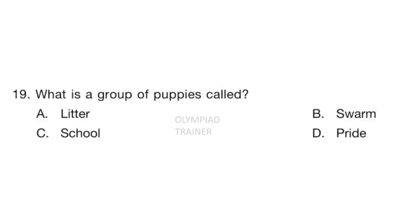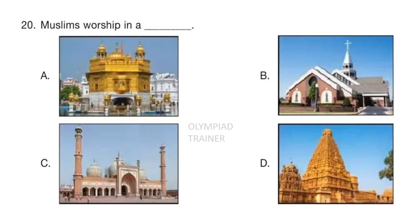Question 19: What is a group of puppies called? Answer is option A — Litter. Question 20: Muslims worship in a... Look at the options. Answer is option C.